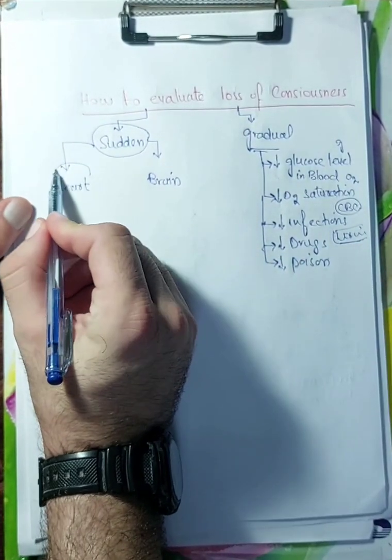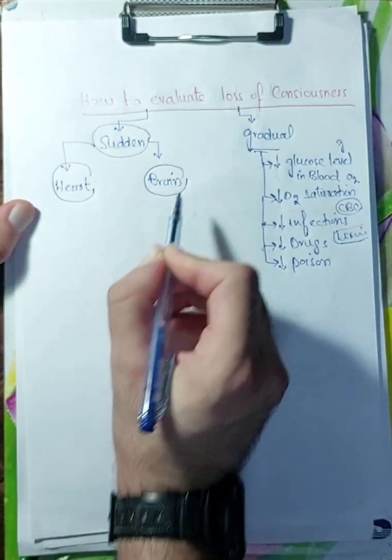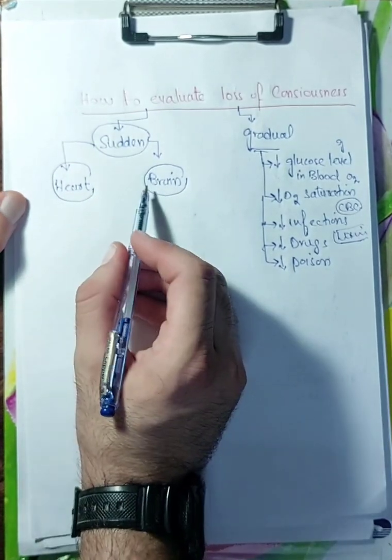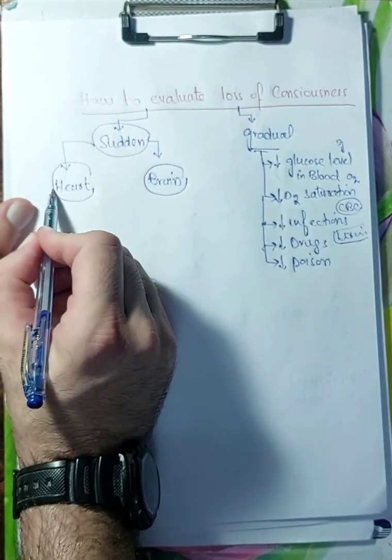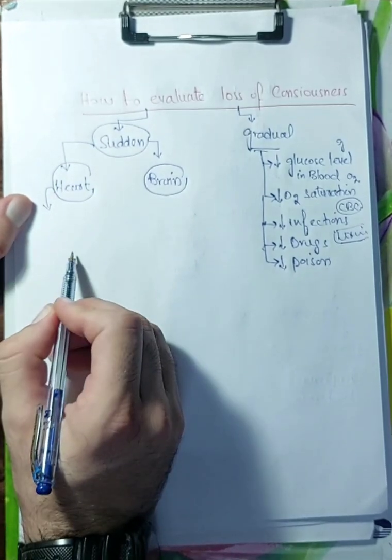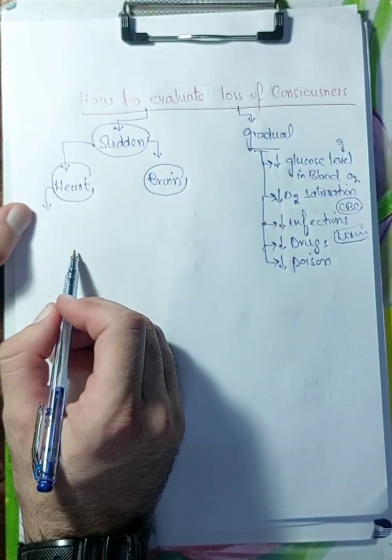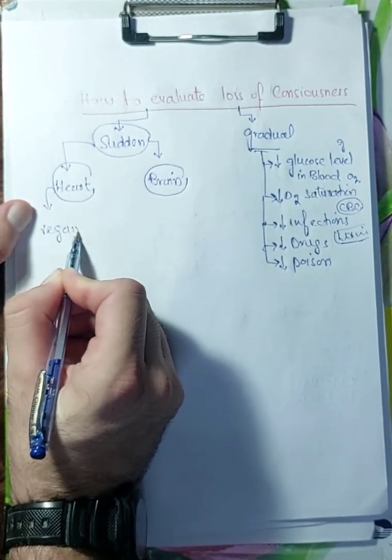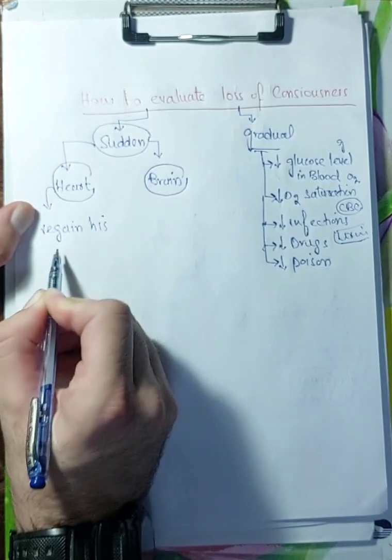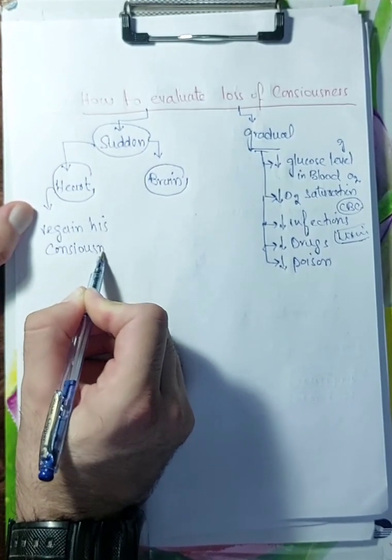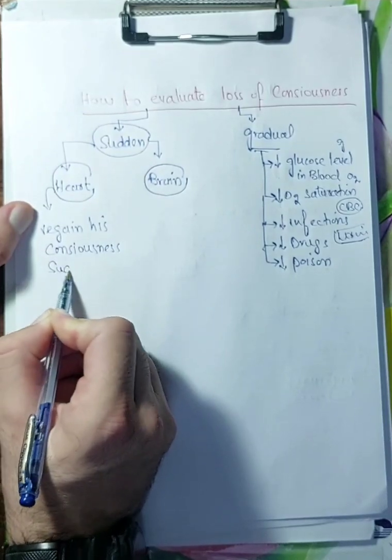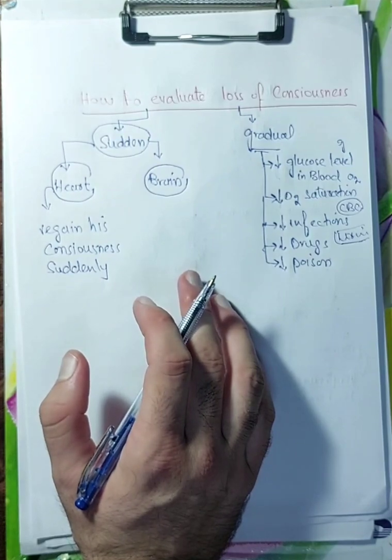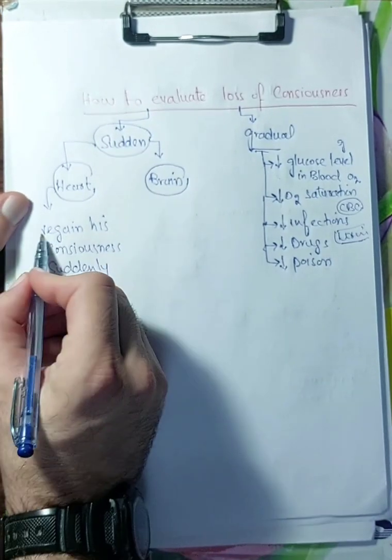Now, we will focus on heart. There is sudden loss of consciousness. How will you rule out the diagnosis? If he lost his consciousness level suddenly and you are focusing on the heart, how will you know the pathology is in the heart? You will observe if he regained his consciousness suddenly. If all of a sudden he becomes okay, comfortable, and conscious, the pathology is in the heart.